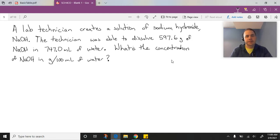We're looking at concentration, and here's a question: A lab technician creates a solution of sodium hydroxide, NaOH. The technician was able to dissolve 597.6 grams of NaOH in 747 mils of water. What is the concentration of NaOH in grams per 100 mils of water? So there's a couple ways we could do this.